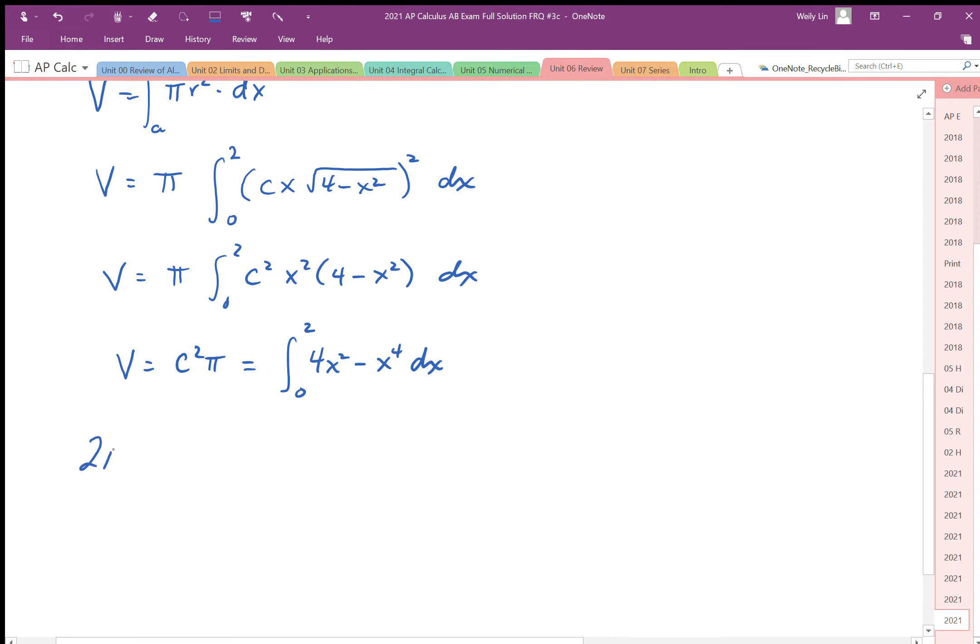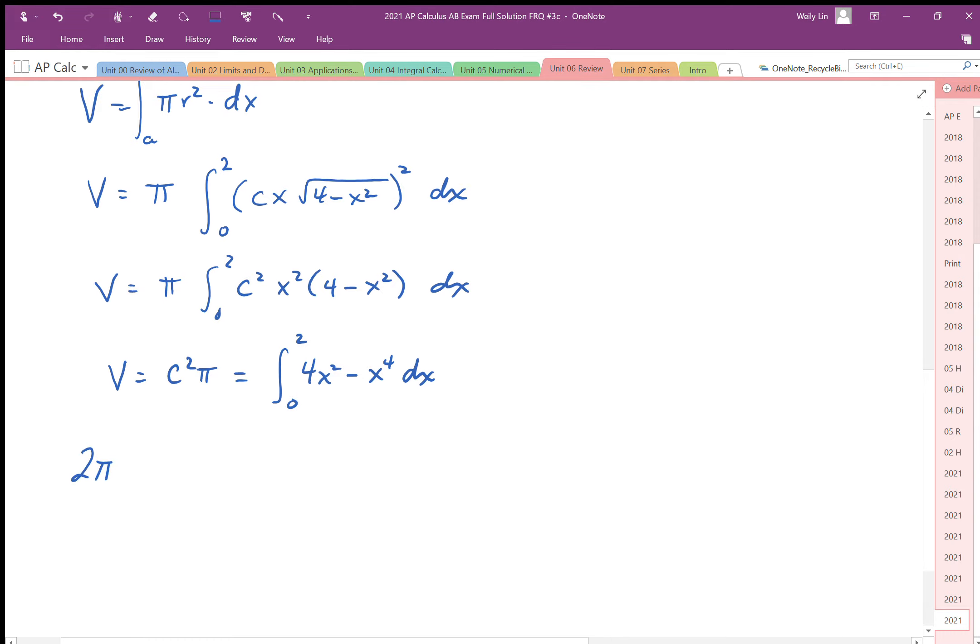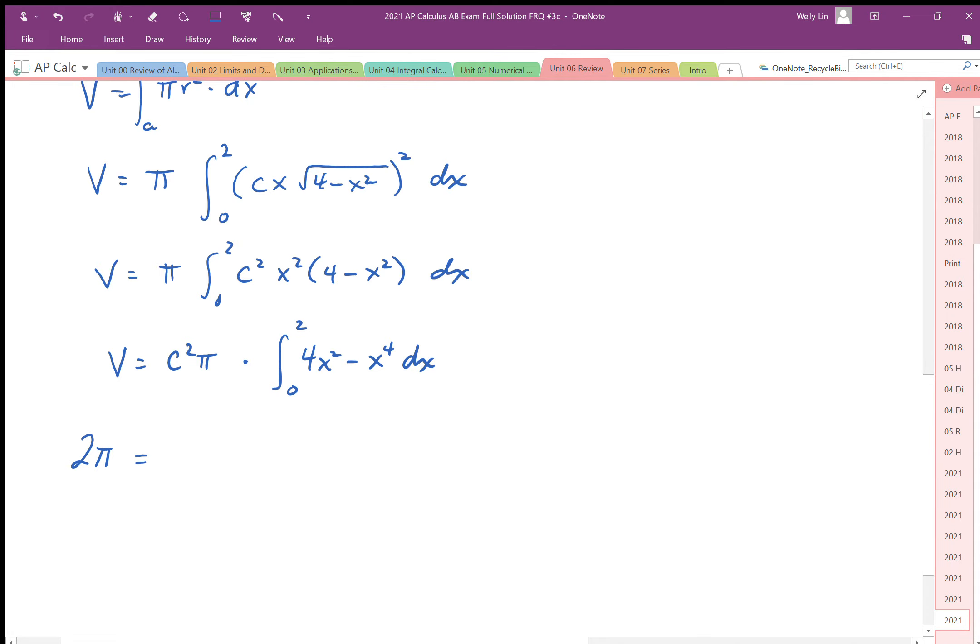So this looks like this: 2π is my volume in cubic inches, and that's going to be calculated. It's going to be c²π times whatever this integral is. I'm going to actually anti-differentiate this.